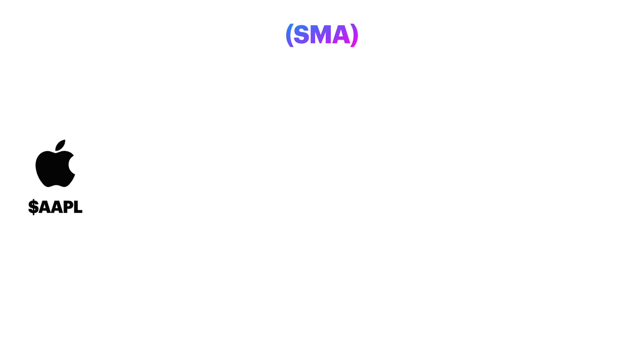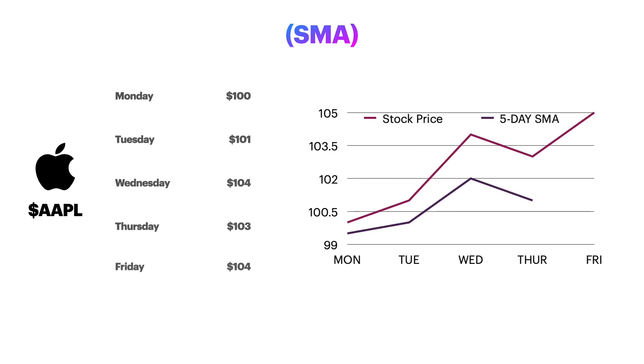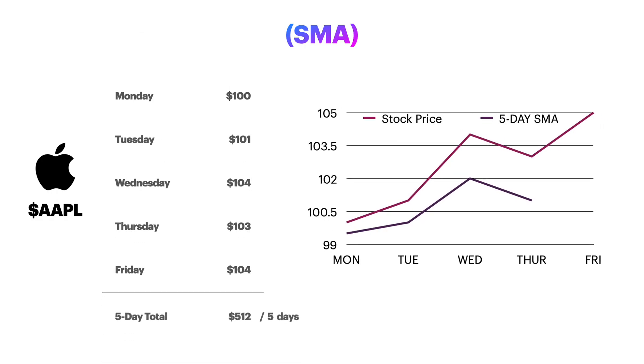To calculate the SMA, you take the sum of the closing prices of a security over a specific period of time, and divide by the number of periods.